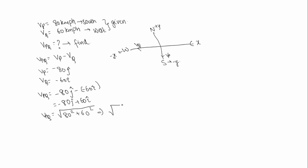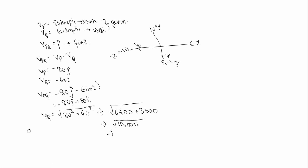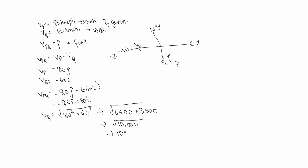The magnitude is the square root of 80 squared plus 60 squared, that is 6400 plus 3600. So we get 100. The velocity of P with respect to Q is 100 km per hour.